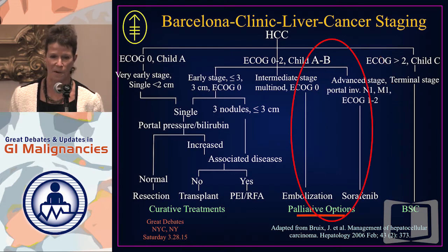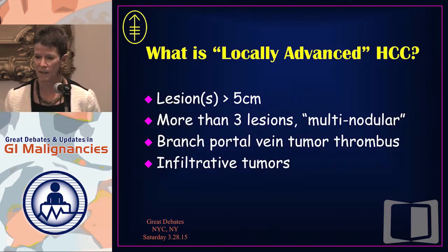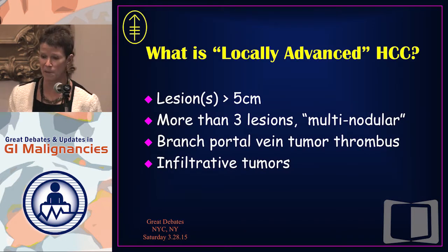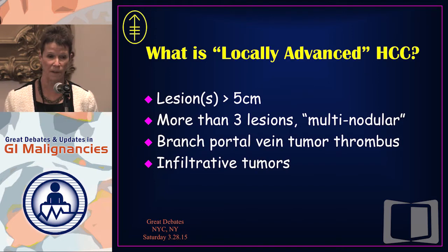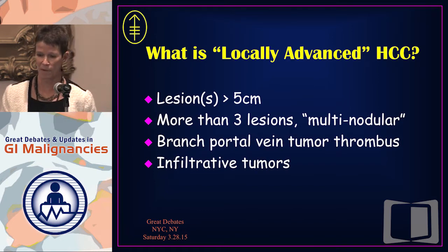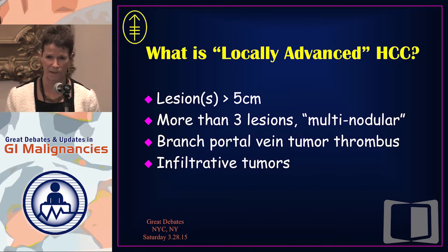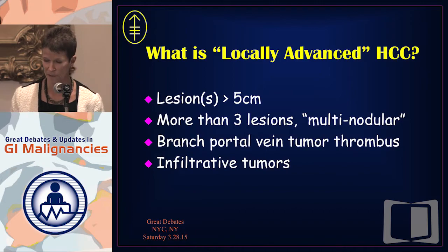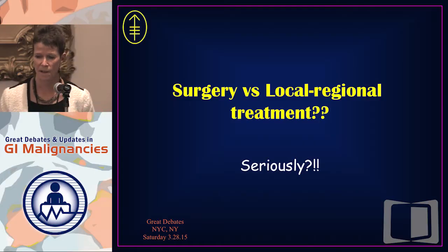I think today we're arguing about these patients. I've decided to define them as patients with larger lesions bigger than five centimeters, more than three lesions, multi-nodular, and patients with branch portal vein tumor thrombus. If you have main portal vein tumor thrombus, that falls into the more advanced category, and maybe also patients with infiltrative tumors, because they seem to be a different group of patients.